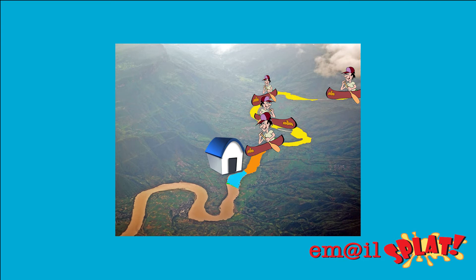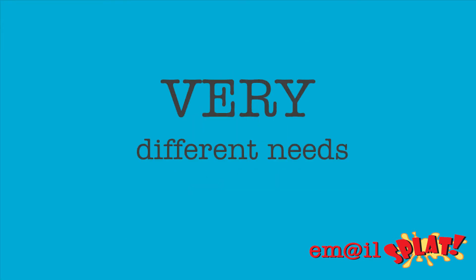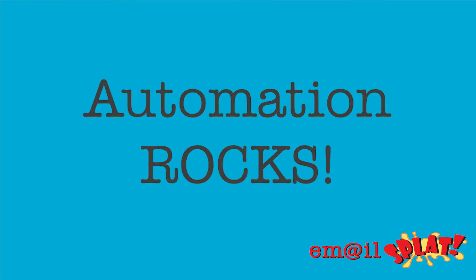Current client — depending on your industry this may be a five-minute process or a five-year process. Past client — self explanatory. The problem with most newsletters is they treat all of these people the same. They are not the same. They have very different needs. And this is where a good automation platform really shines.